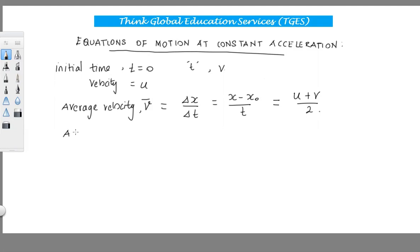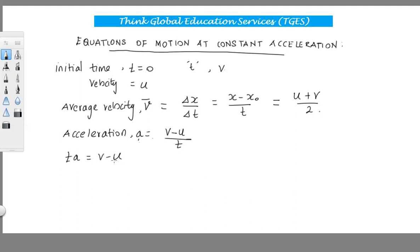Acceleration is given as change in velocity over time — that is, final velocity minus initial velocity over time t. From this we can derive the first equation of motion. Time multiplied by acceleration equals v minus u, so therefore final velocity v equals u plus at. This is the first equation of motion.